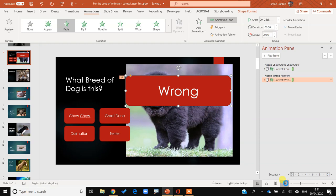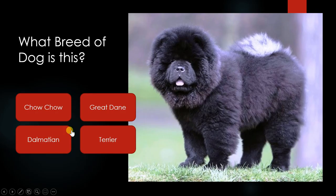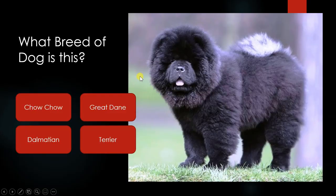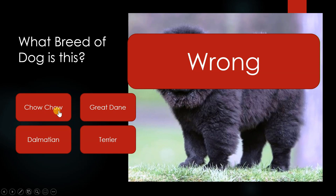Now if I click Chow Chow it comes up correct; if I click Dalmatian or Great Dane it comes up wrong. But there's another problem: if you click wrong repeatedly and then click right, the 'correct' label appears underneath 'wrong' and you can't see it. So the idea is we want to block off those buttons after a choice is made.